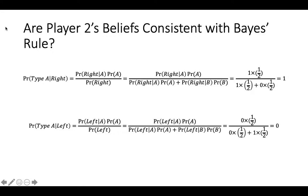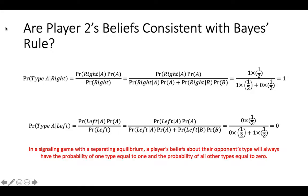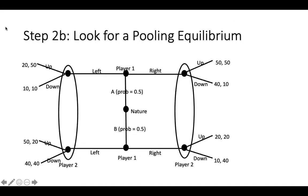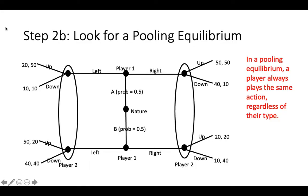When we plug in the relevant probabilities based on player 1's strategy and nature's prior probabilities that player 1 is type A or type B, we see that player 2's beliefs are consistent with Bayes' rule. In a signaling game with a separating equilibrium, a player's beliefs about their opponent's type will always have the probability of one type equal to 1 and the probabilities of the other types equal to 0. We can now determine whether this game has a pooling equilibrium. One possible pooling equilibrium would be for player 1 to always play right, but we can rule this out because a type B player 1 will always want to change to playing left, regardless of what player 2 does. Therefore, this game does not have a pooling equilibrium.